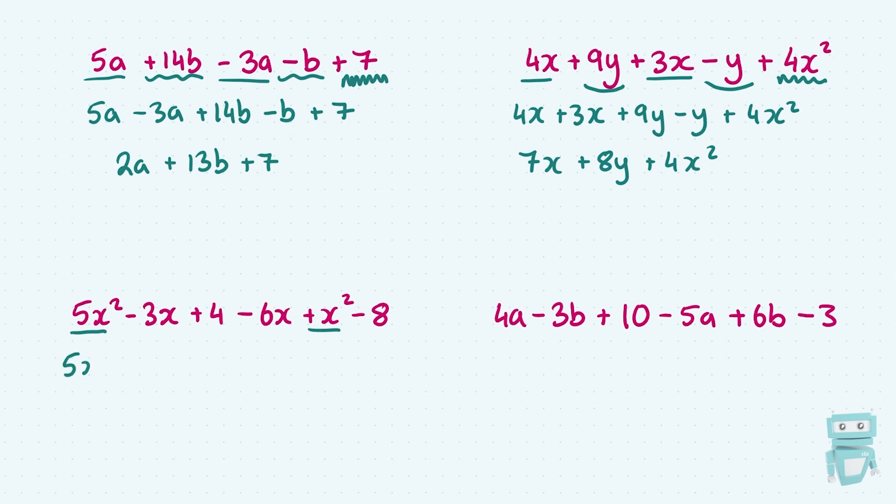Then moving on to the x's, and make sure you keep the sign in front of them. I've got minus 3x and minus 6x coming along next. And for the constants at the end, I've plus 4 and I've minus 8. So being very careful there, keeping the original sign in front of each number.